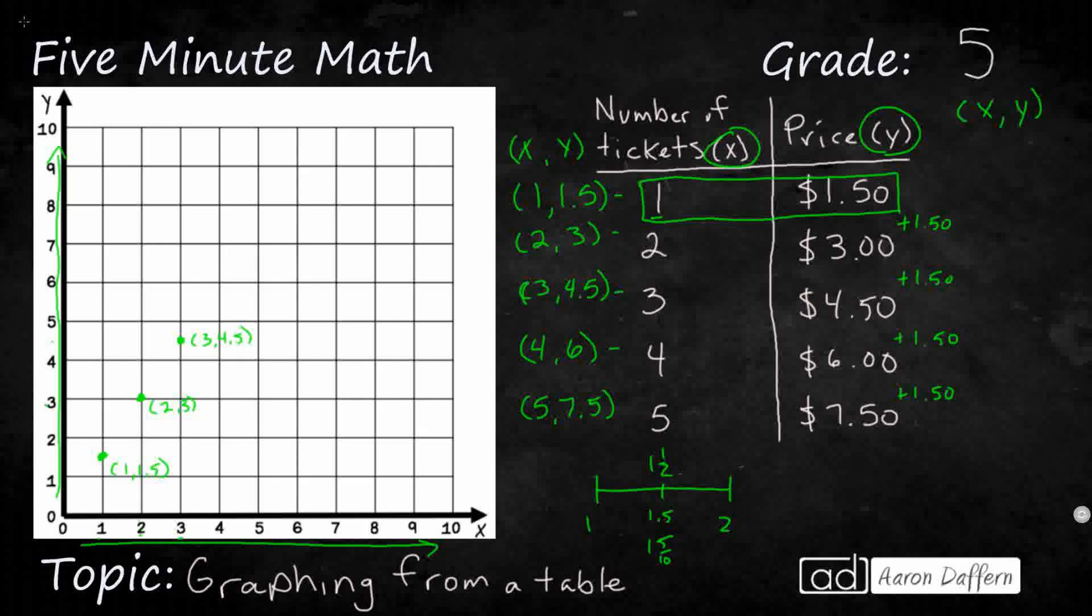4 and 6 is my next one. That's going to be pretty easy because they're both whole numbers. There's my 4, there's my 6. Make sure we're doing them in order. It goes right there. So I've got a 4 x value, 6 is my y value.